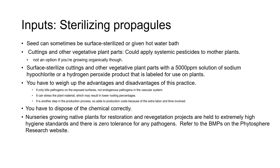If you're collecting cuttings from your own mother stock you could use systemic pesticides to spray the stock plants ahead of time to kill any endogenous pathogens. This isn't an option if you're growing organically, as there are no organic-approved systemic pesticides that are effective against fungal, bacterial, viral and water mold pathogens. You can surface sterilize cuttings and other vegetative plant parts with a solution of sodium hypochlorite or bleach, or Zerotol, which is a hydrogen peroxide based product, but you have to weigh up the advantages and disadvantages of surface sterilization.